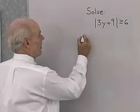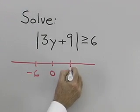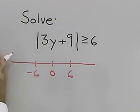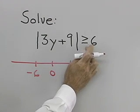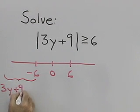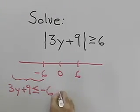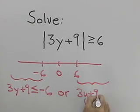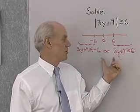I can draw a little number line with 0, negative 6, and positive 6. The expression 3y plus 9 must be below negative 6 or above positive 6, because the distance between that expression and 0 has to be greater than or equal to 6 units. So with this diagram, 3y plus 9 is less than or equal to negative 6, or 3y plus 9 is greater than or equal to positive 6.